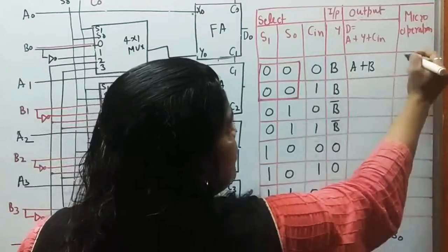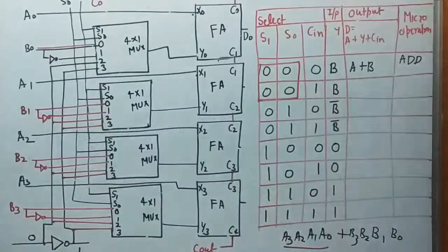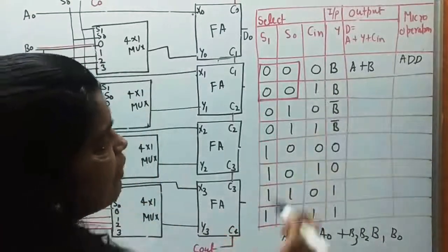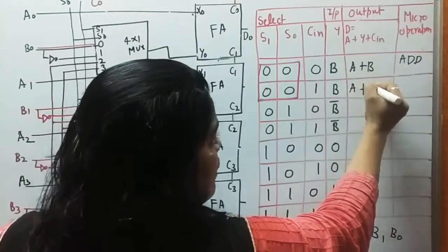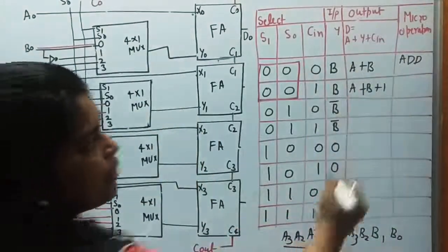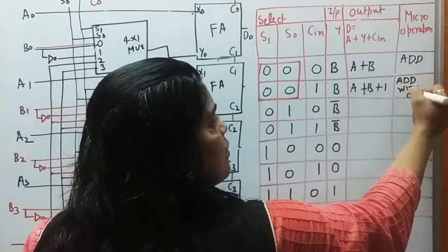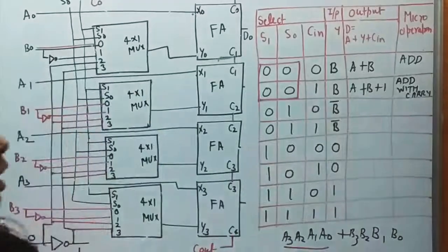This micro-operation is called Add — written as A plus B. In the second case, when Cin equals 1, it becomes A plus B plus 1, which is called Add with Carry.